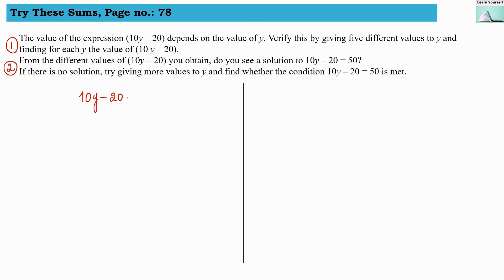If we take y equals to 1, we substitute y equals to 1 in this expression. So 10 multiplied by 1 minus 20 — we get 10 minus 20, and the answer is minus 10. So for y equals to 1, we got the value minus 10. This is our first case.